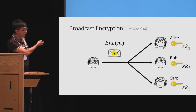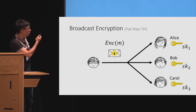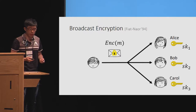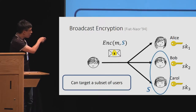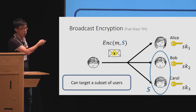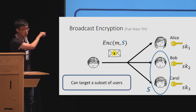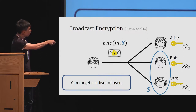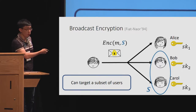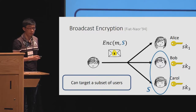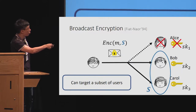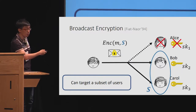In a Broadcast Encryption scheme, it has somewhat the same syntax in the sense that there are many users, each with respective keys. But now the functionality provides a way to target a specific subset of users. So when you encrypt, you provide a subset S as part of the encryption, and only Bob and Carol will be authorized to decrypt. In particular, Alice won't be able to infer any meaningful information about the message.